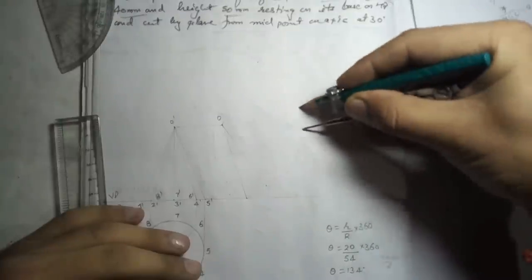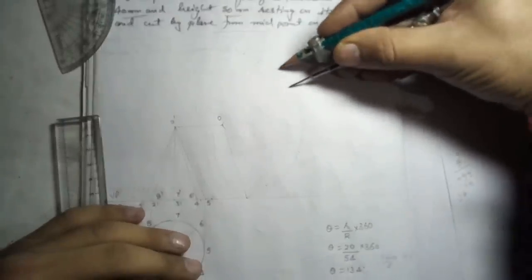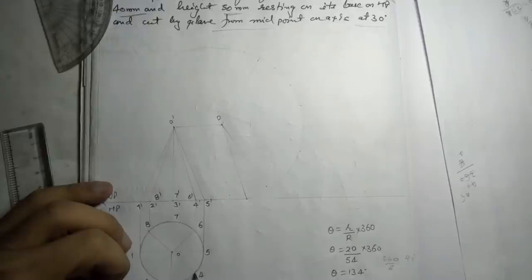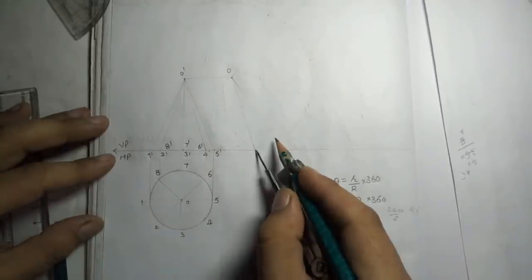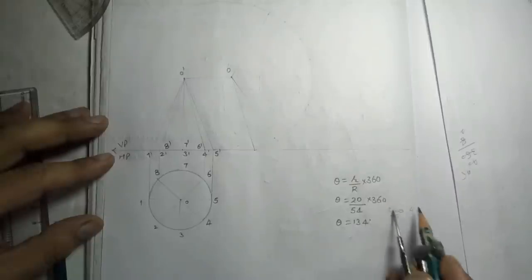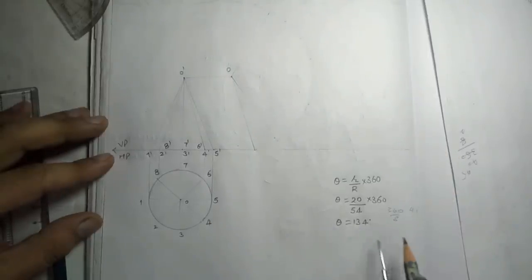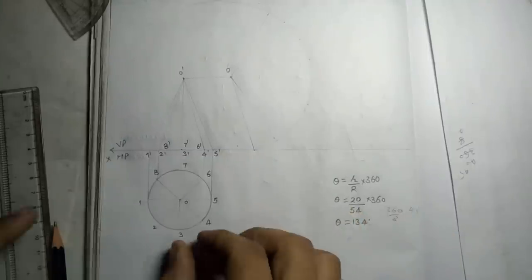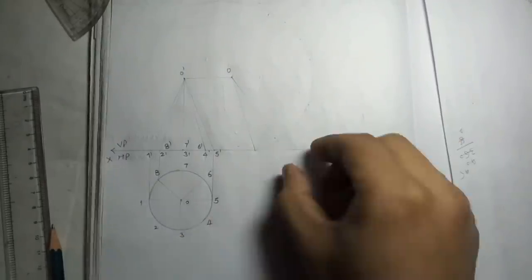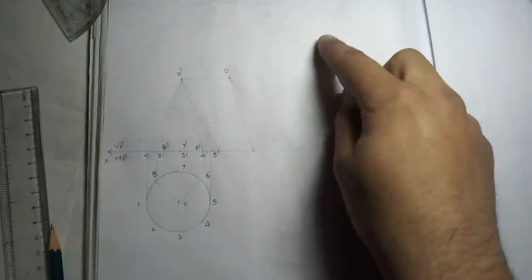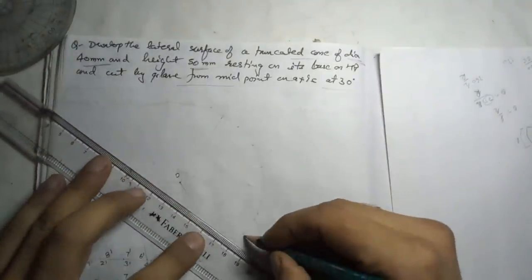You can divide it into eight parts directly. For example, if you open the compass from point 3 to 4, you get approximately the same value and can apply it here as well. This method also works, like what we did in pentagonal prism, pentagonal pyramid, hexagonal pyramid — taking the side and marking parts. But the angle method is more accurate, so I prefer to show it this way.